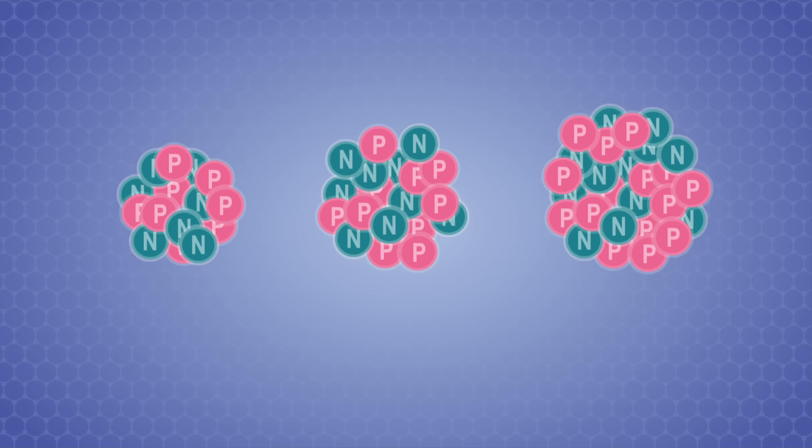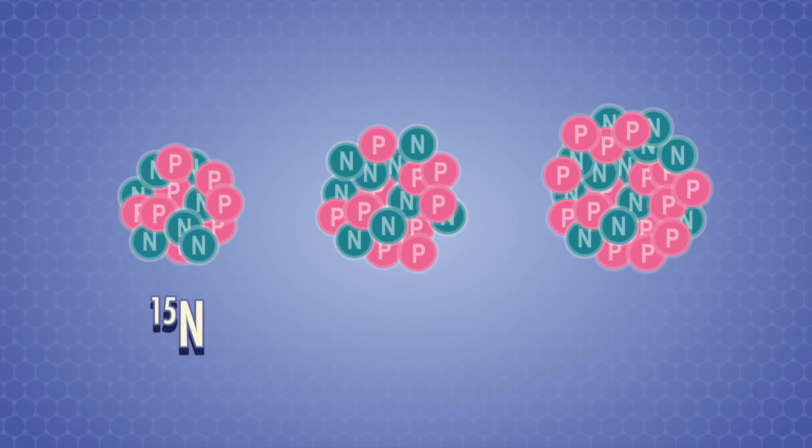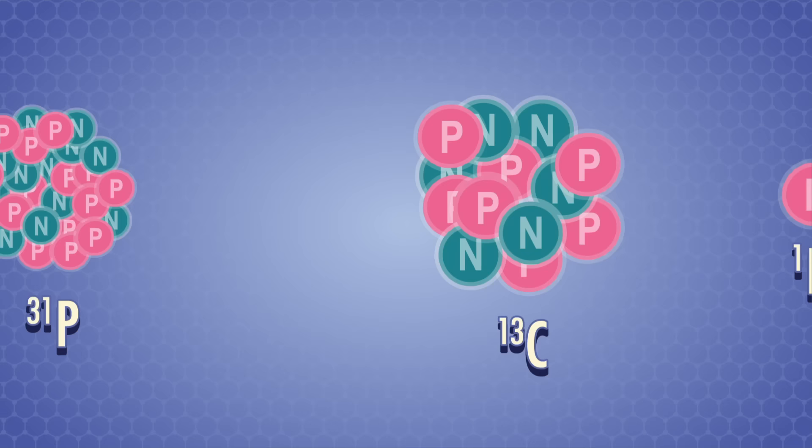Obviously, there are quite a lot of elements with odd mass numbers, but we're only interested in a handful of them for NMR. Nitrogen-15, fluorine-19, phosphorus-31 all show up occasionally, but the real stars are carbon-13 and hydrogen. We'll focus on hydrogen today and do proton NMR.